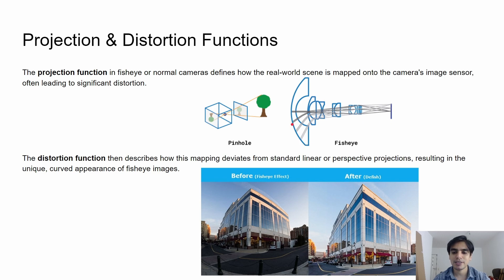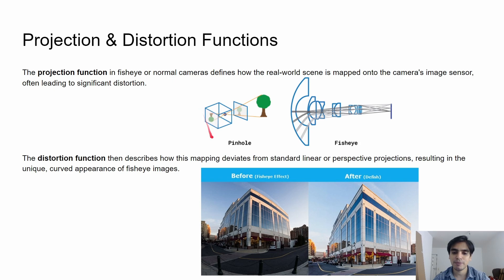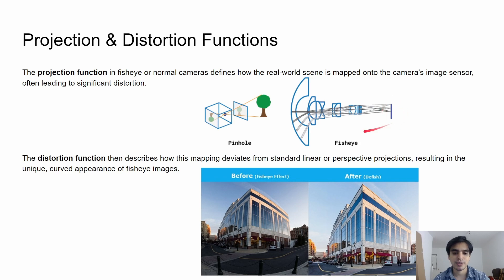In a simple rectilinear or pinhole camera, light from an object passes through the pinhole and hits on the image plane — the 2D plane — creating an image of the 3D object. Similarly, in the fisheye camera, the light from the object passes through the lens and hits onto the image plane in order to create the image.